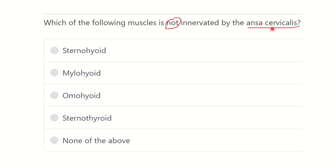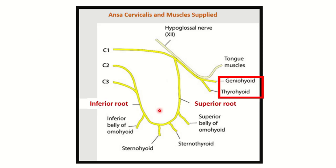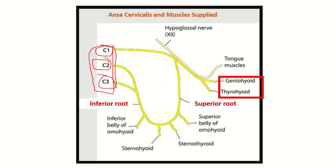First of all, let's look at the ansa cervicalis. The ansa cervicalis is a nerve plexus formed from three nerve roots: cervical one, cervical two, and cervical three. It has two parts — the superior root and the inferior root — and different muscles are supplied by this ansa cervicalis.